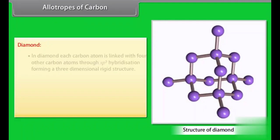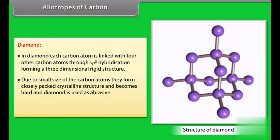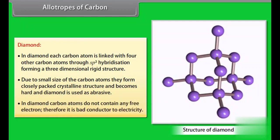Diamond. In diamond, each carbon atom is linked with four other carbon atoms through sp3 hybridization forming three-dimensional rigid structure. Due to small size of the carbon atoms, they form closely packed crystalline structure and becomes hard and diamond is used as abrasive. In diamond, carbon atoms do not contain any free electron. Therefore, it is a bad conductor to electricity.